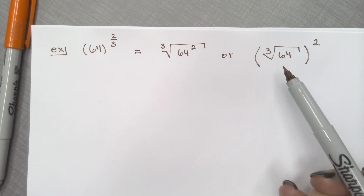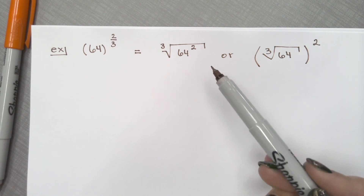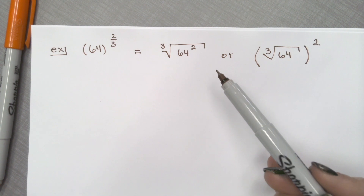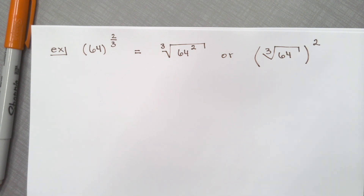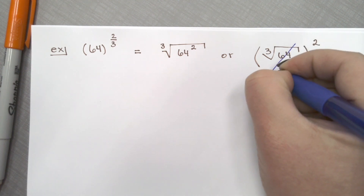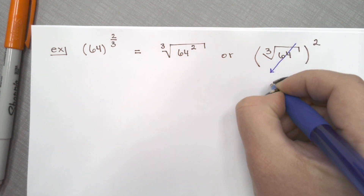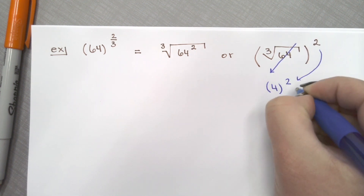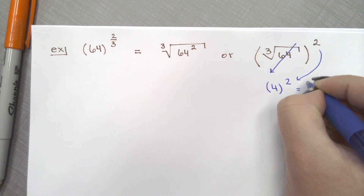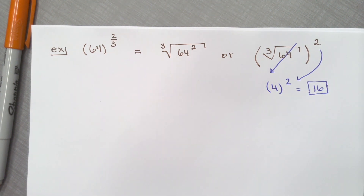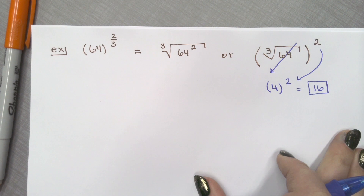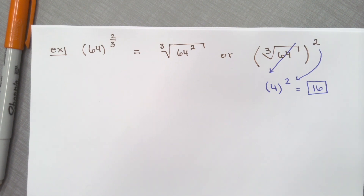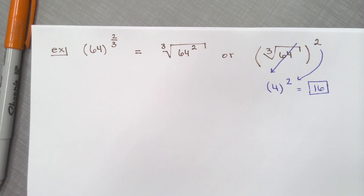This is testing you on your conversion, going from a radical to a rational exponent or in this case rational exponent to a radical. I personally think this second form is easier, especially since you're being tested without a calculator. I don't know what 64 squared is without a calculator, so the cube root of 64 is — anyone? — 4, good. And then you just have 4 squared, which is 16. So although that looks a little scary, once you break it down and rewrite it, it shouldn't be too bad. That's going to be something you'll see tomorrow on the test for your simplifying section.